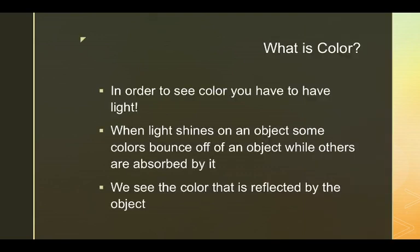Color. We're going to move right into color. In order to see color, you have to have light — that's why we're talking about them at the same time. When light shines on an object, some colors bounce off while others are absorbed by it. The color you see an object has is the color reflected by that object. So your kitchen table, if it's a dark walnut-y kind of brown, then you're going to have that color reflected by that object.